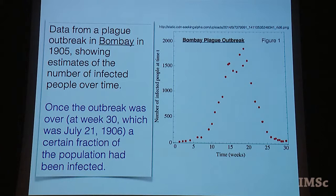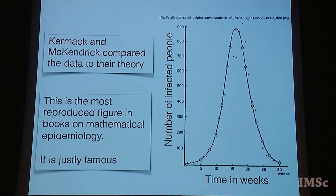This is data from a plague outbreak in Bombay in 1905 — the number of infected people at time t, in weeks. It starts off small, goes up, then comes down, and once the outbreak was over at week 30 a certain fraction of the population had been infected. This is the result of the Kermack-McKendrick model applied to this disease, and you can see it fits pretty much all of these points. This is the most reproduced figure across all textbooks and monographs in mathematical epidemiology, and very justly famous for that reason.